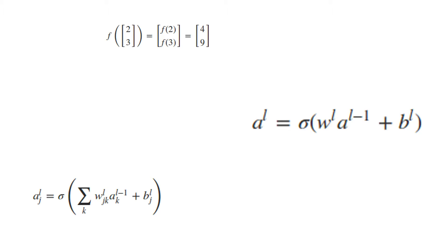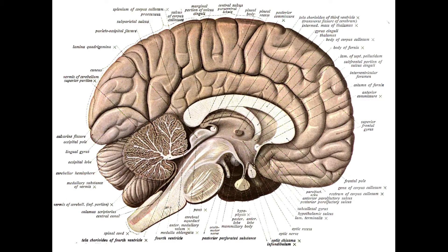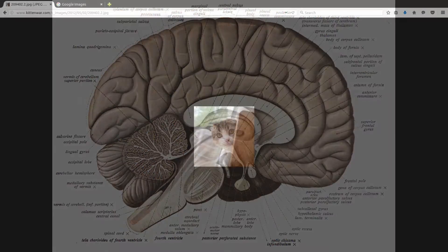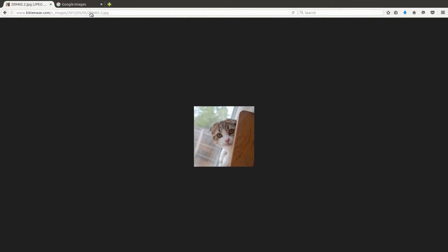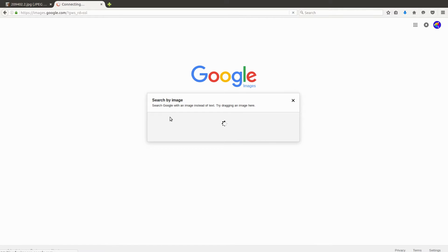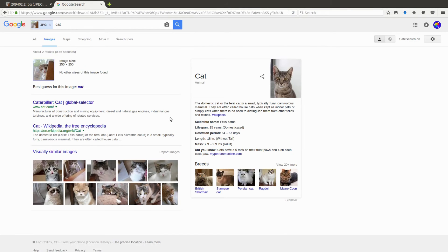You have probably used a neural network before, whether you know it or not. It's the mathematical algorithm that lets you put your favorite image into Google Images, and from there, their neural network will identify and show you similar images based on the image you input.